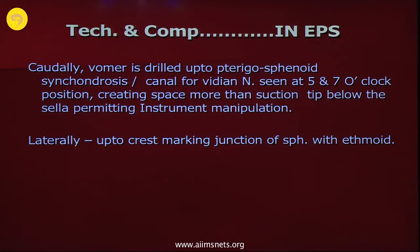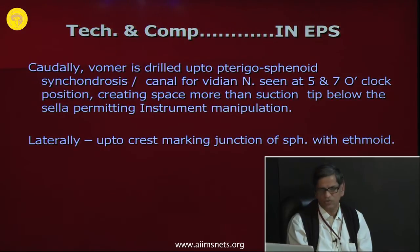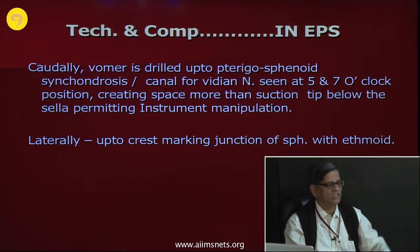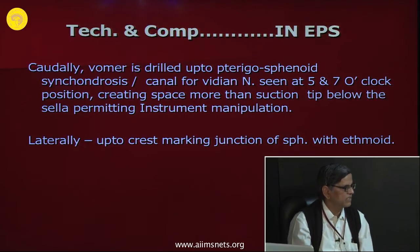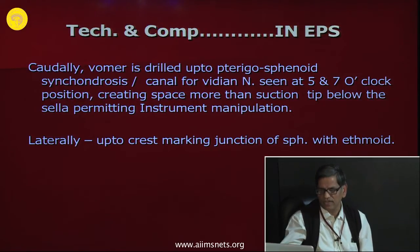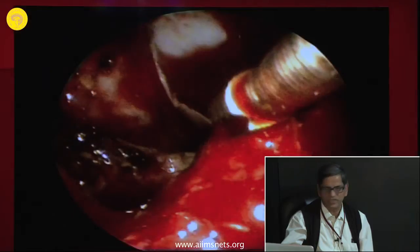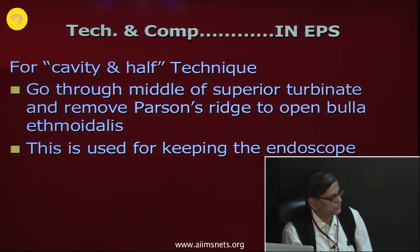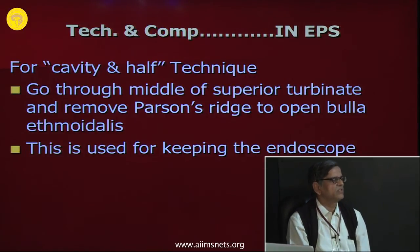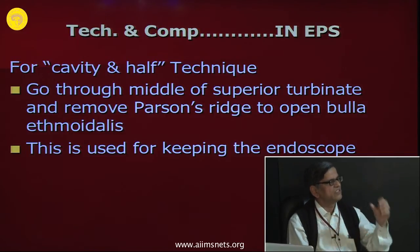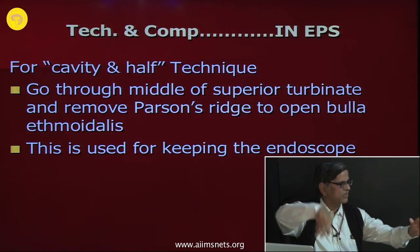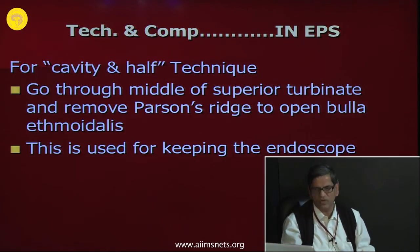Caudally, the vomer is drilled up to the pterygosphenoid synchondrosis or the canal for the vidian nerve seen at 5 or 7 o'clock position, creating space under the floor of the sella so instruments can pass without entanglement. Laterally, drill up to the crest marking the junction of sphenoid with the ethmoids. The 'cavity and half' approach involves opening through the ostium, opening the parson's bar and bulla ethmoidalis — this keeps the scope there without occupying space in the sphenoid cavity.